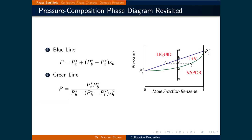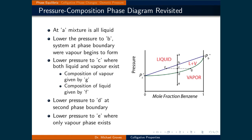Revisiting the phase diagram: the first expression, P_total = P*_toluene + (P*_benzene − P*_toluene)·x_benzene, is the straight blue line linking the partial pressure of pure toluene to that of pure benzene, separating the liquid phase from the liquid-vapor phase. It is essentially Raoult's law expressed as a function of the mole fraction of one component. The second expression, P_total = P*_toluene·P*_benzene / [P*_benzene − y_benzene·(P*_benzene − P*_toluene)], is the curved green line that separates the liquid-vapor phase from the vapor phase.